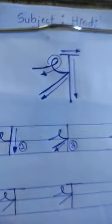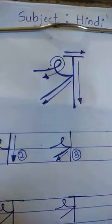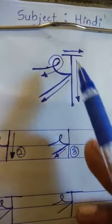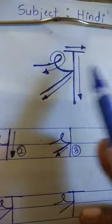In four steps, you have to write this letter. See this properly. 1, 2, 3, 4.